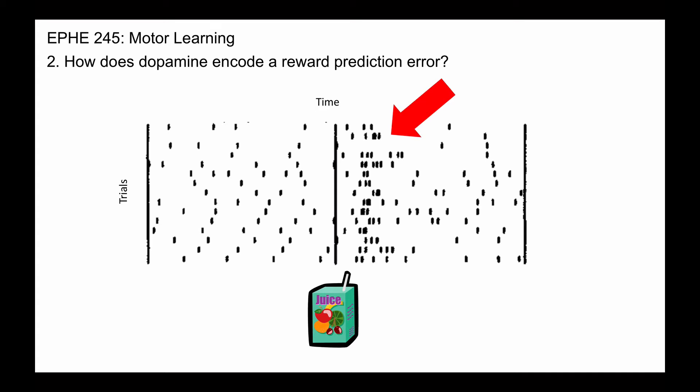And the working hypothesis is that this reflects a prediction error. This change in firing rate is literally the prediction error.